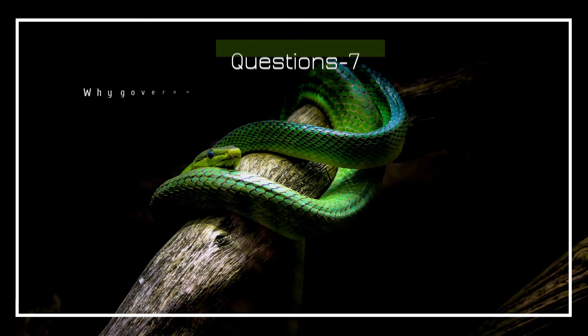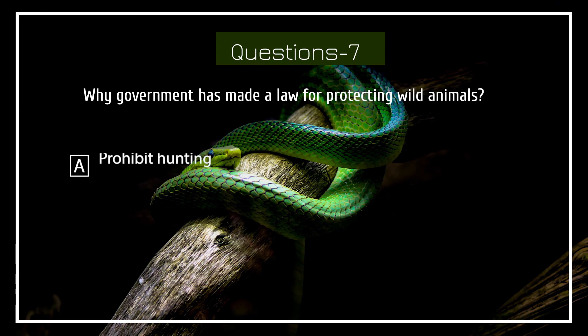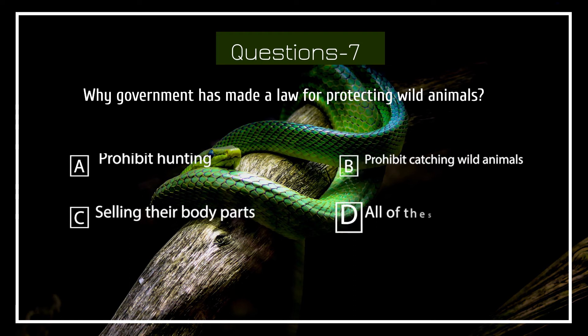Why has the government made a law for protecting wild animals? Options: Prohibit hunting, prohibit catching wild animals, selling their body parts, all of these.